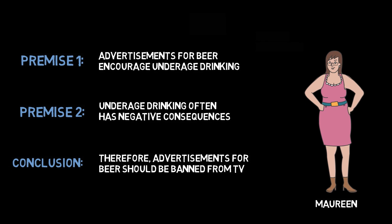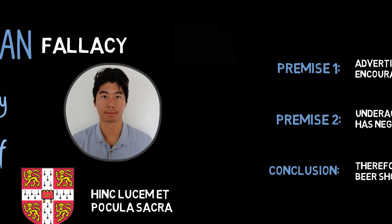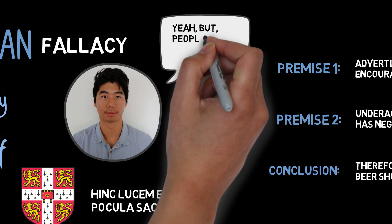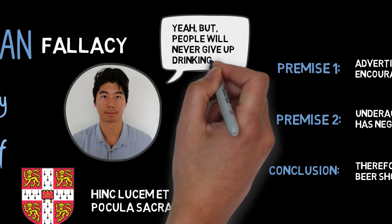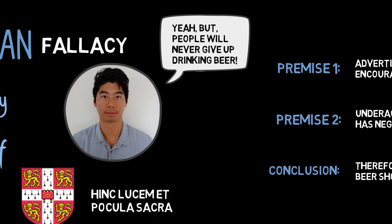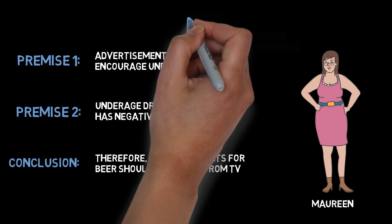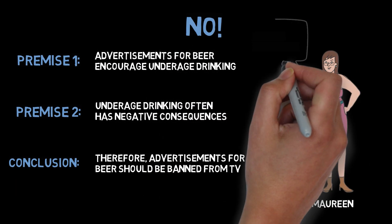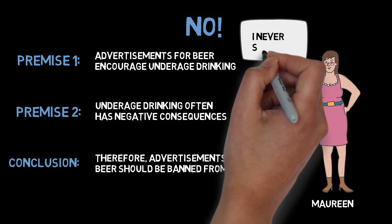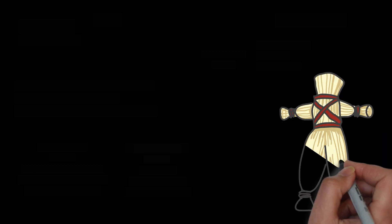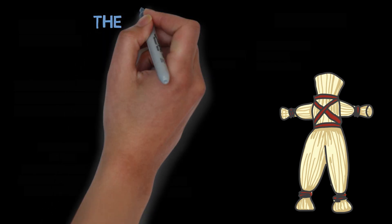And let's say I respond with the following objection: Well, yeah, but people will never give up drinking beer — they've been doing it for ages. Is this a good response to Maureen's argument? No, because Maureen never claims it would be a good idea to give up drinking beer. That's not her argument at all. In this scenario, I've committed the strawman fallacy, since I've attacked a position that Maureen never advances.